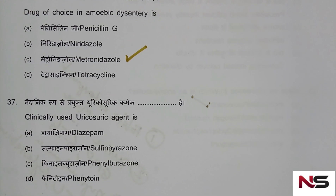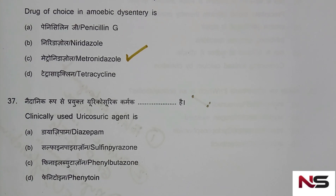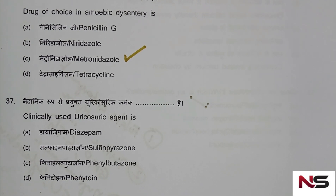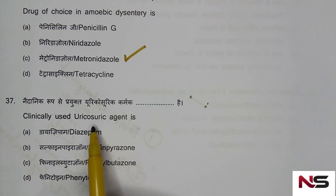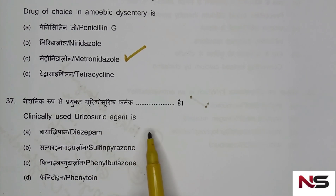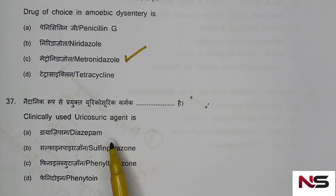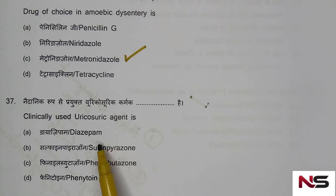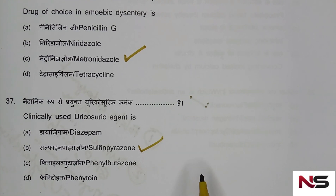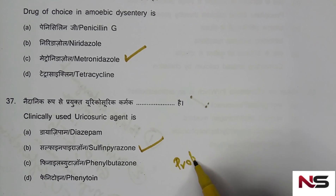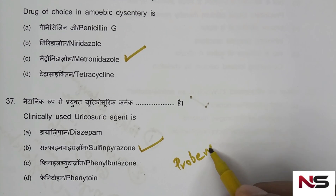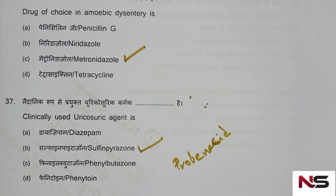Question 37: Clinically used uricosuric agent. Uricosuric agents are used for treatment of chronic gout or hyperuricemia — they promote excretion of uric acid. Options are: diazepam, sulfinpyrazone, phenylbutazone, phenytoin. The correct answer is sulfinpyrazone. Another example of a uricosuric agent is probenecid, also used for treatment of chronic gout or hyperuricemia.